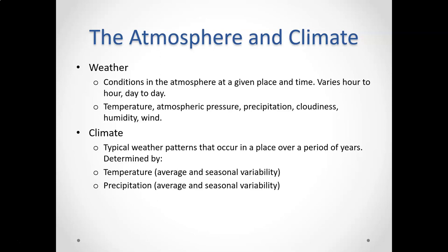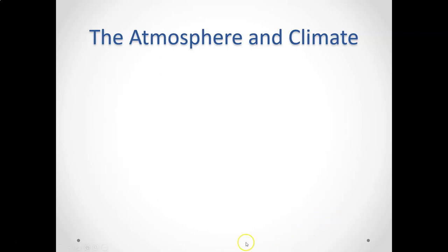It's important to note the difference between weather and climate, because that's something you hear a lot when people are trying to argue against climate change — how can you have periodic historical cold spells and still have a planet whose temperature is warming? Well, it's very possible, and let's talk about why that is.